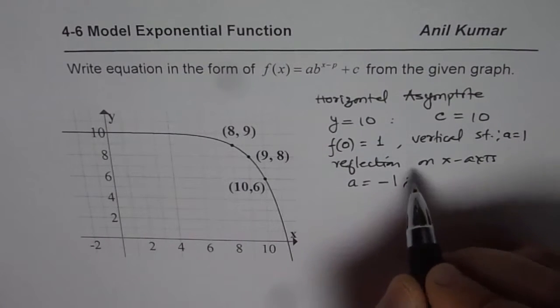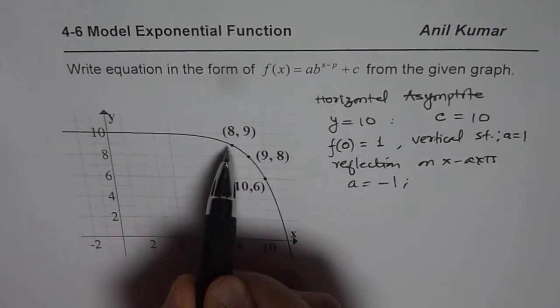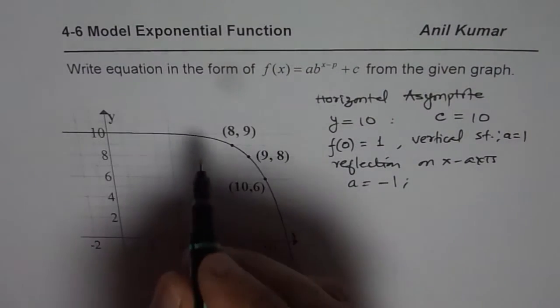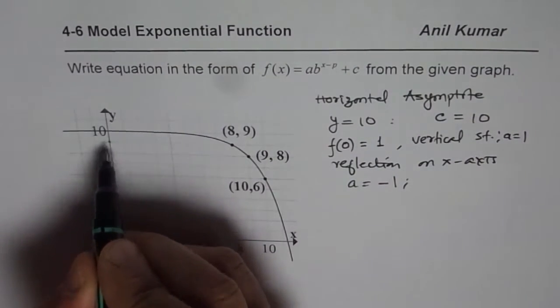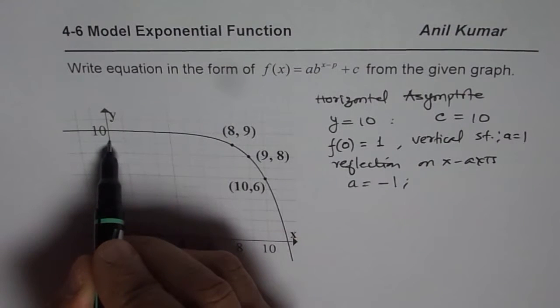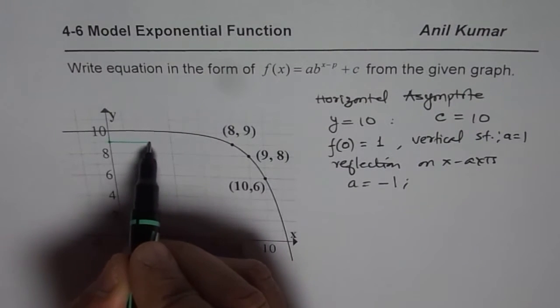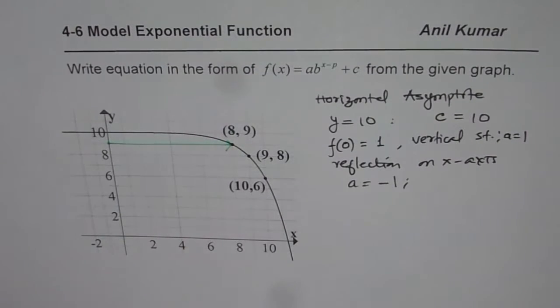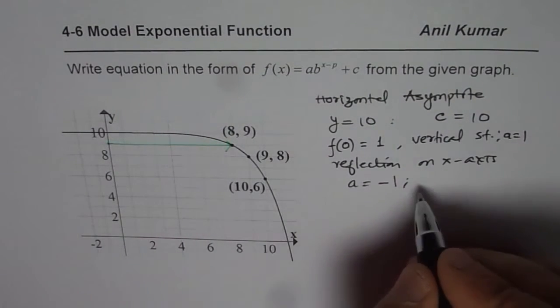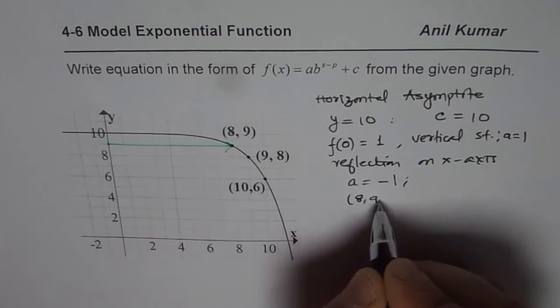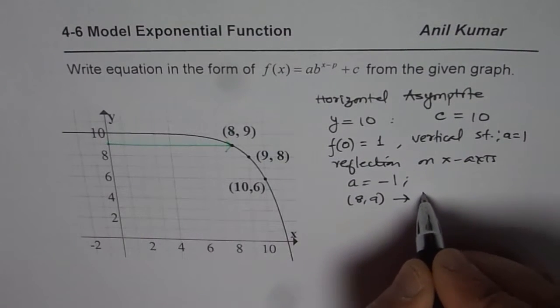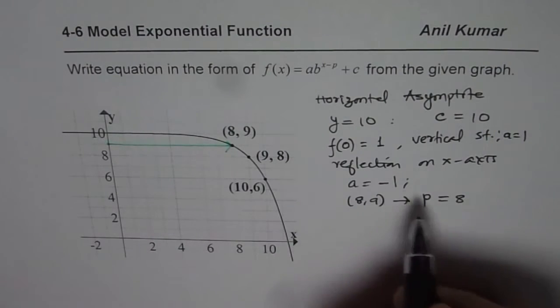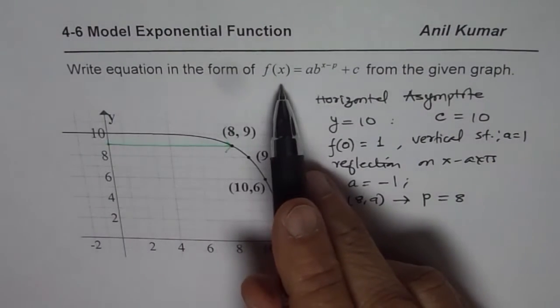So all this we get from the graph and we also get horizontal translation. You can see from here that if I push it backwards, then 1 unit below, I will get the y intercept. But in the graph, it has been translated 8 units to the right. Do you see that? So the point, which is (8, 9), gives us value of horizontal translation p as 8.